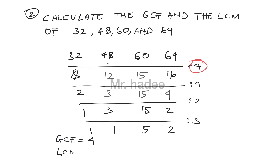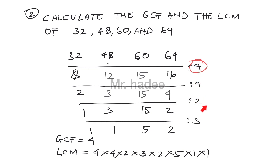LCM equals 4 times 4 times 2 times 3 times 2 times 5 times 1 times 1, which equals 960. Thank you for watching.